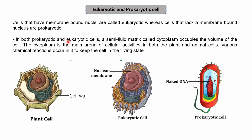In both prokaryotic and eukaryotic cells, a semi-fluid matrix called cytoplasm occupies the volume of the cell. Cytoplasm is present in both. It is the main area where cellular activities in both plants and animal cells take place — most chemical reactions, most enzymatic reactions important for the survival of the cell take place in the cytoplasm itself.